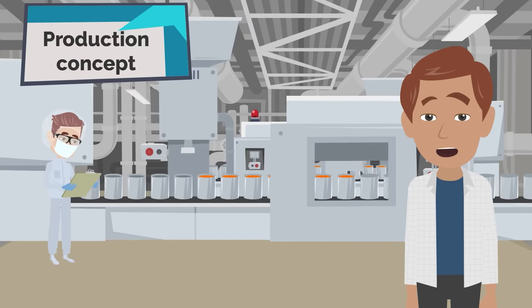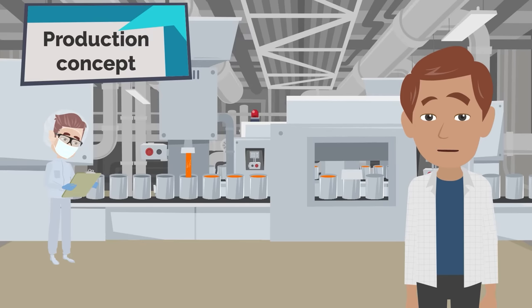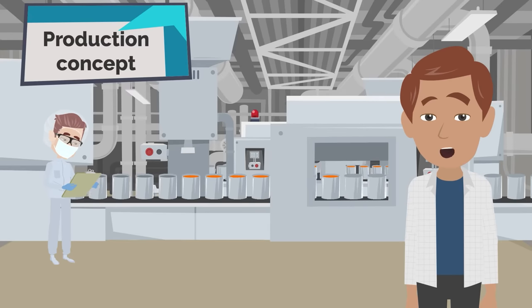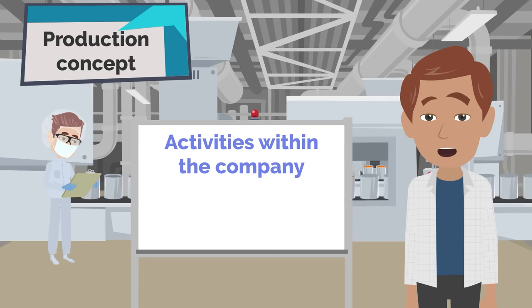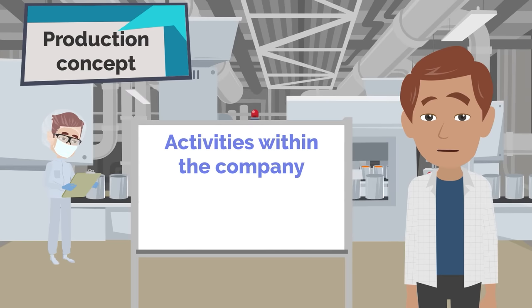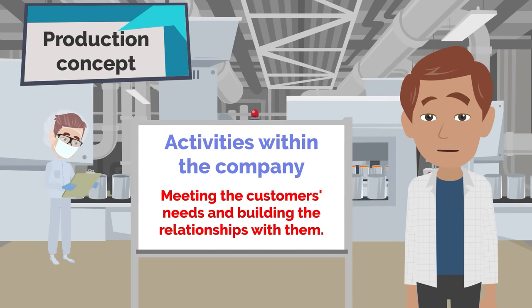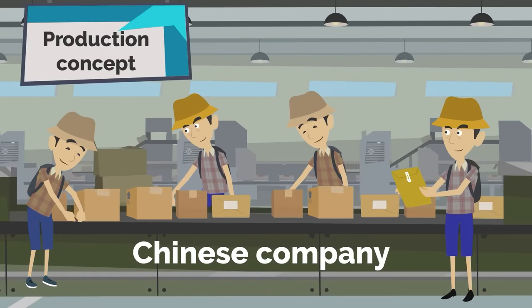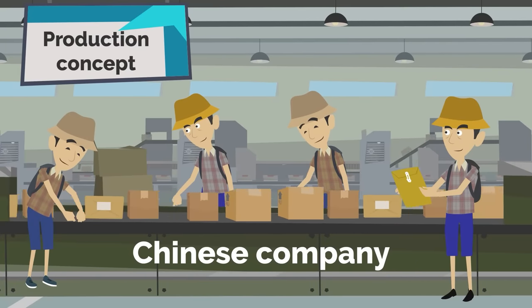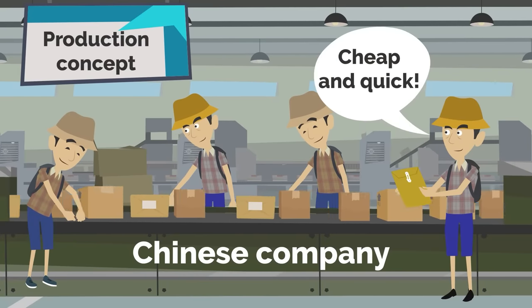However, the production concept is not perfect. Most of all, it is marked with marketing myopia. It results from focusing on the activities within the company, which can lead to ignoring the real marketing objectives, which should be meeting the customers' needs and building relationships with them. Currently, the majority of Chinese companies are an example of organizations that are production oriented — they focus on providing cheap and quick-to-produce solutions.